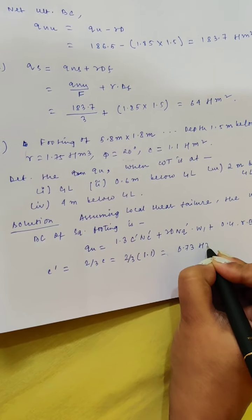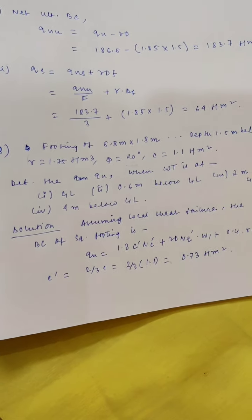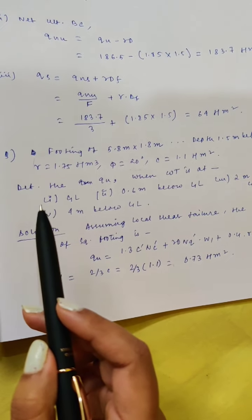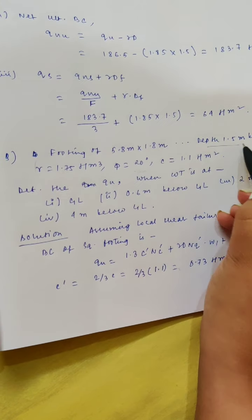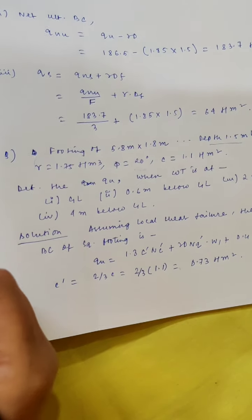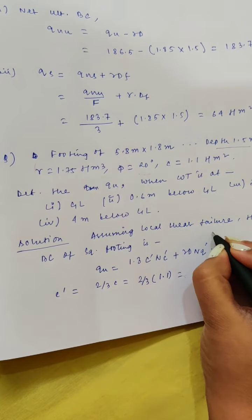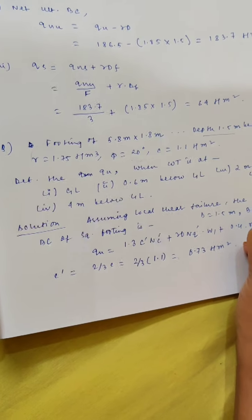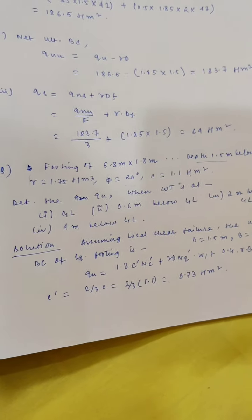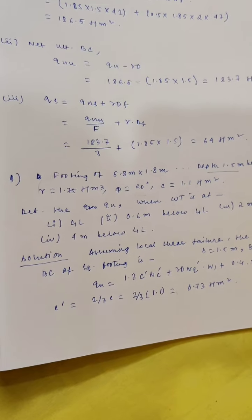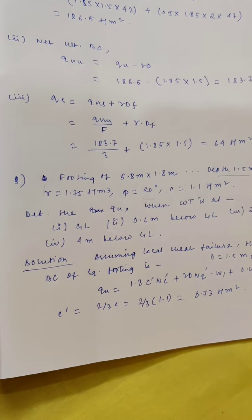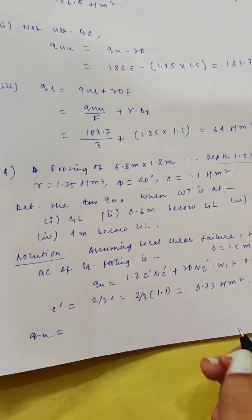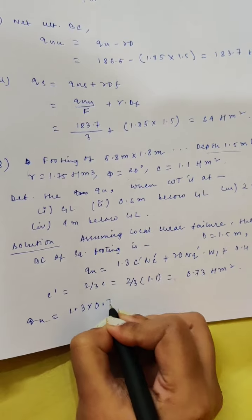The formula is: qu = 1.3·c'·Nc' + gamma·D·Nq'·W1 + 0.4·gamma·B·Ngamma'·W2. We first find c': c' = (2/3)·c = (2/3) × 1.1 = 0.73 ton per meter square. W1 and W2 are water table correction factors.